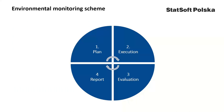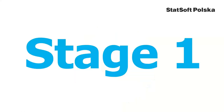Environmental monitoring can be divided into four basic stages: preparing the plan, execution of the plan, evaluation of monitoring results, and generation of the report. Step 1: monitoring plan.